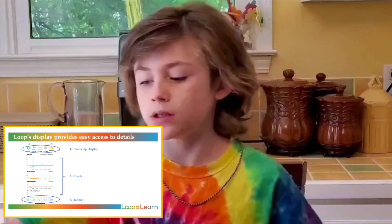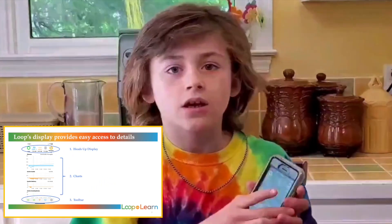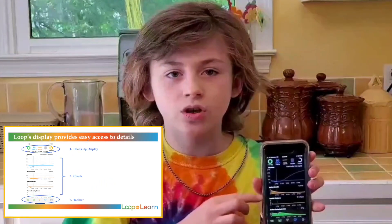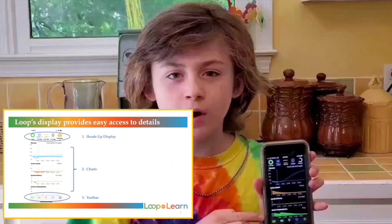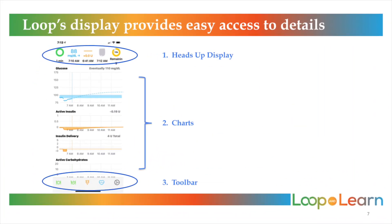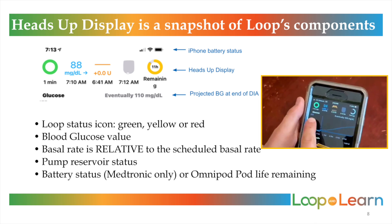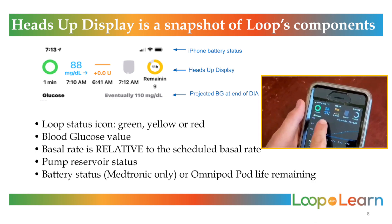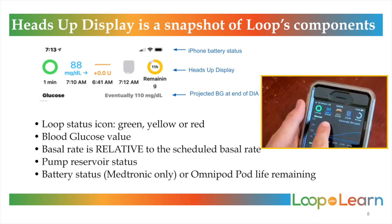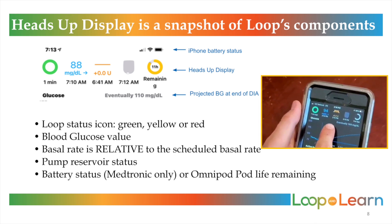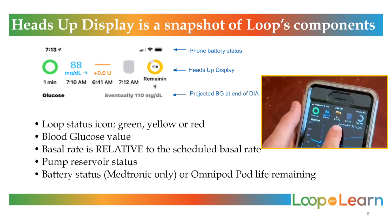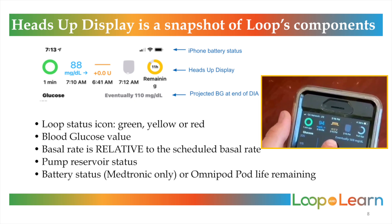The Loop app looks like this. There's a heads-up display, charts, and a toolbar — it's easy to understand. The Loop status icon can be green, yellow, or red. This is the blood glucose value. This is the basal rate, which is relative to the scheduled basal rate.